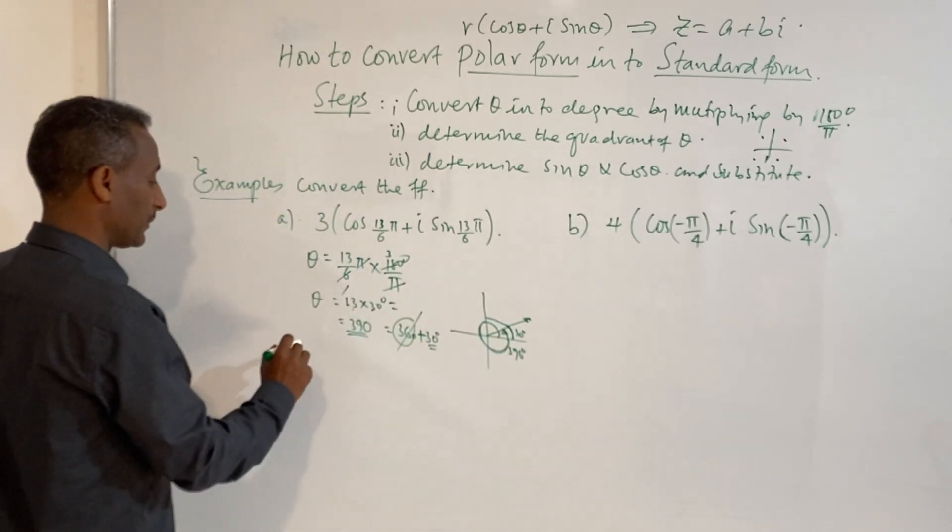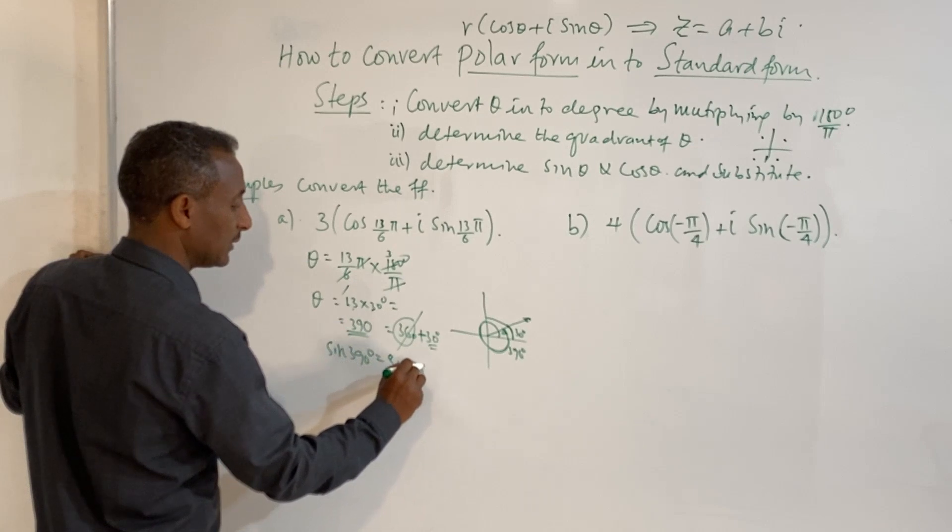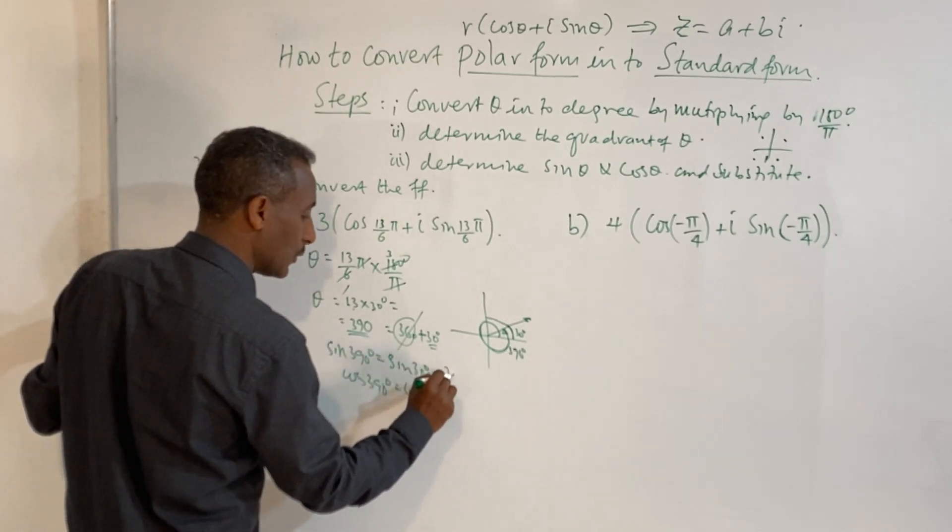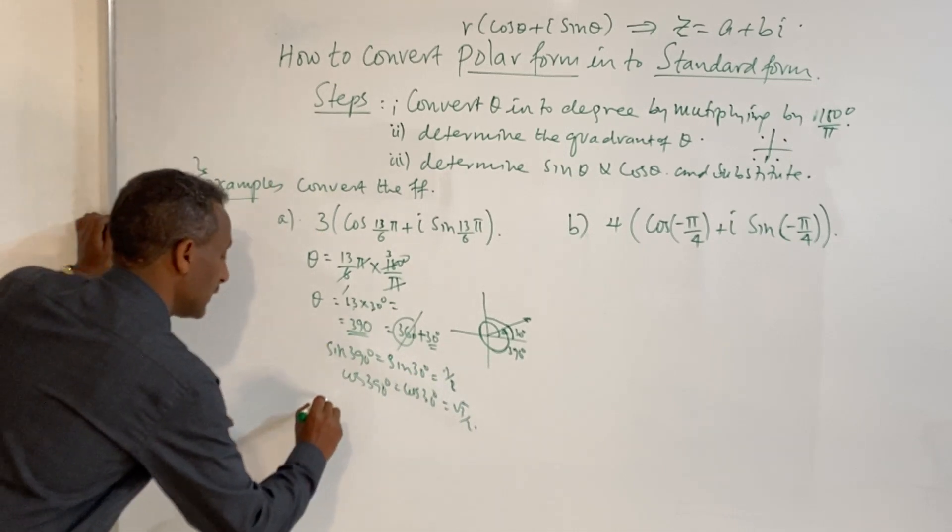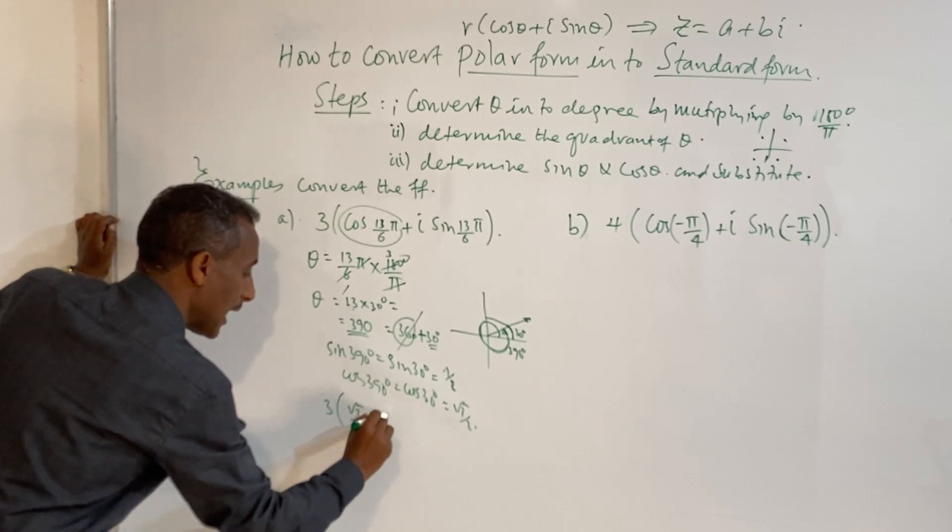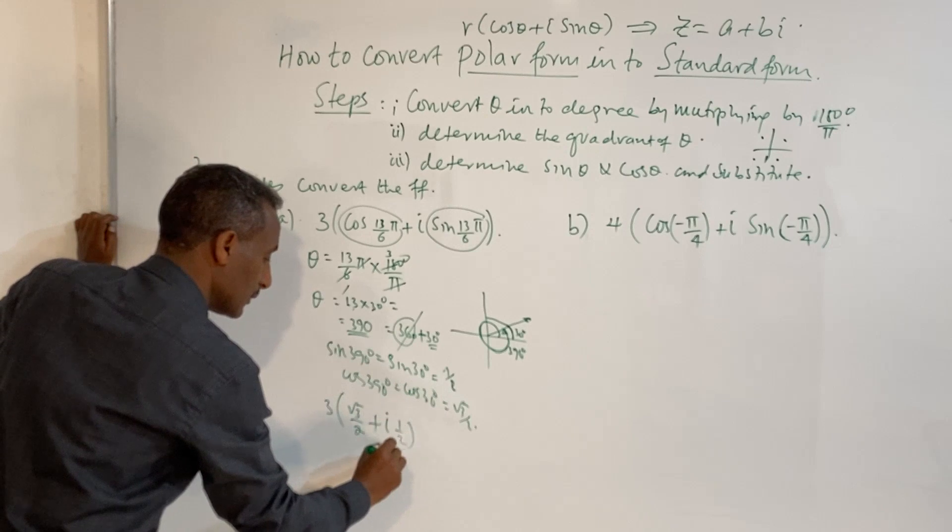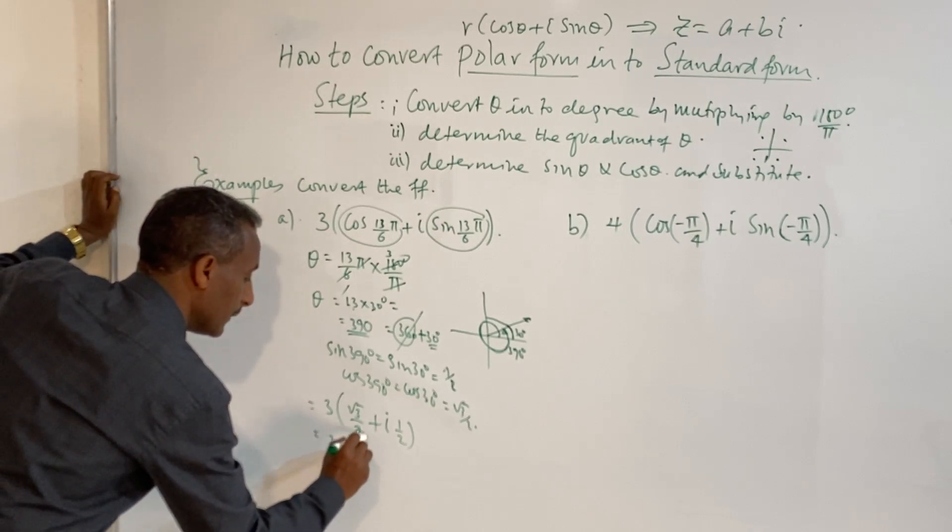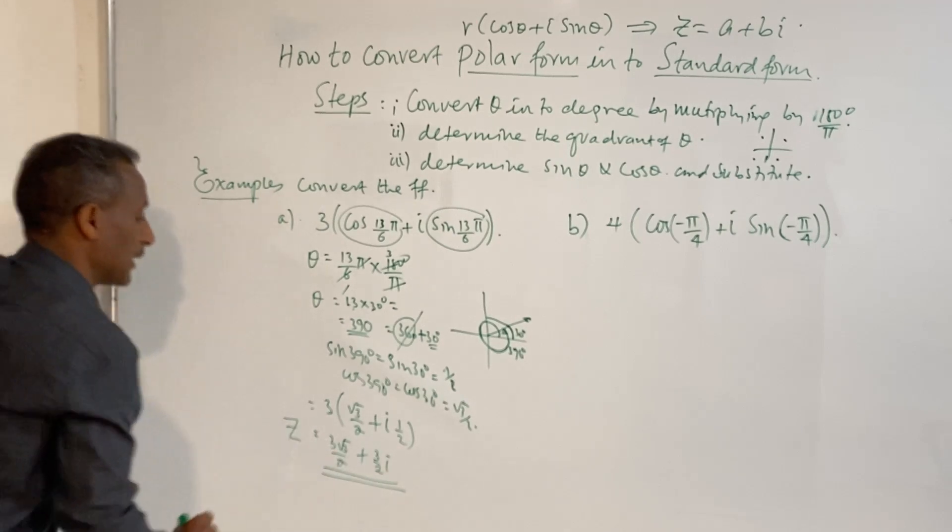So sine of 390 degrees equals sine of 30 degrees, cosine of 390 degrees equals cosine of 30 degrees. Sine of 30 is 1 over 2, cosine of 30 is root 3 over 2. Therefore, 3 times cos is 3 times root 3 over 2, plus i times sin is 3 times 1 over 2 equals 3 over 2.